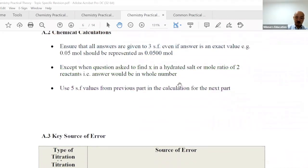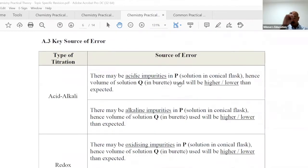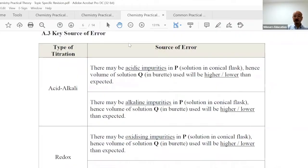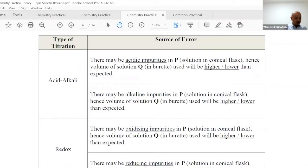Now, key sources of error. This is the one you all wanted to look at - key sources of error for titration. I need to think through this carefully. Acid-alkali, also known as acid-carbonate titration - these two are very similar.